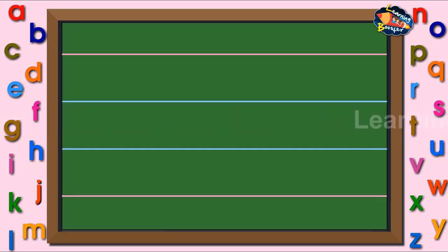We learned to write small letters A to Z using red and blue lines. Look at the two red and two blue lines. Each has a name.